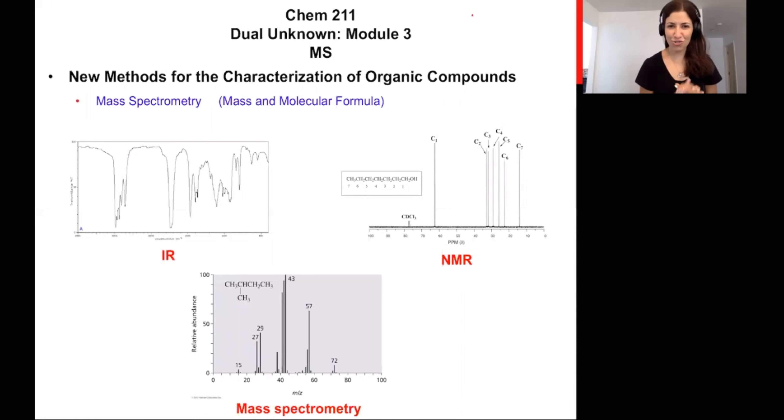Congratulations, you've made it to the third and final module of this week's pre-lab. We've been talking about how we're going to use various data points to identify unknown organic molecules. So the last of the methods of characterization is known as mass spectrometry, and as the name implies, you're going to use the mass of the molecule to help confirm its identity. Seems very logical, right?